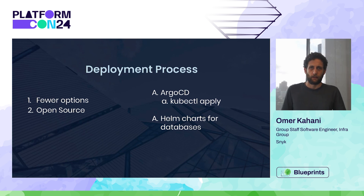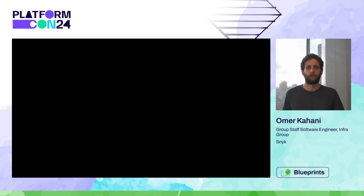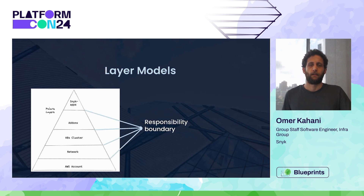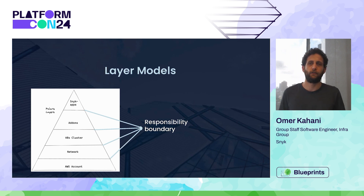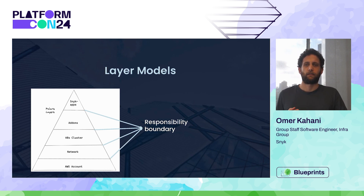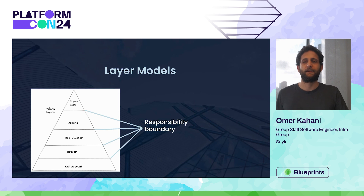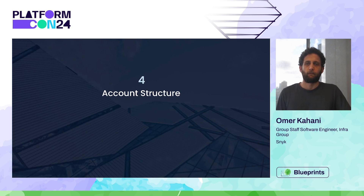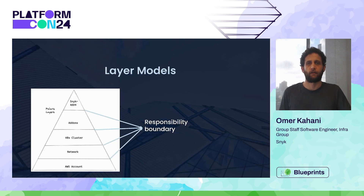The last thing I want to share is our account structure, which is based on the layer idea. Each layer provisions something else into the account, so there is clear ownership between the layers, and that clear line can also be used as a responsibility boundary. We knew that some of our customers — some teams — would only want parts of the platform, so they would want to provision an account with only some layers. Having that clear responsibility boundary allows us to deploy different accounts with different structures, while keeping ownership very clear between us and the application team, allowing them to run on the platform but still have a lot of freedom.